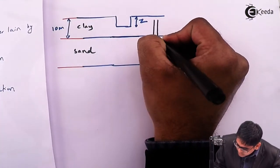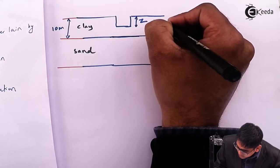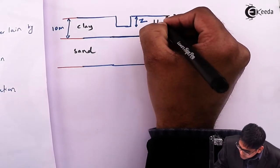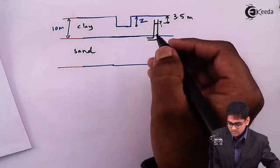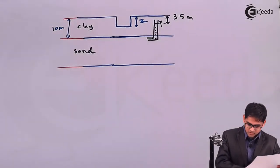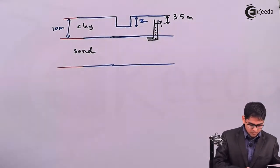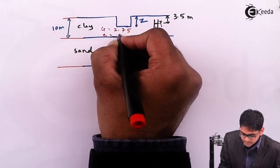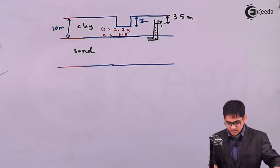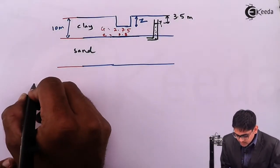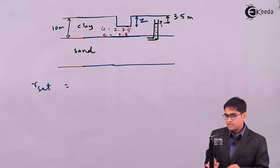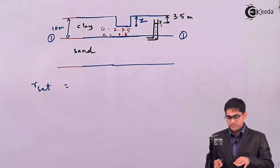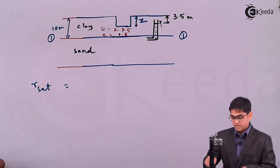If we insert a piezometer in the sand, the water table will rise to an elevation of 3.5 meters. Considering the interface labeled 1-1 at the bottom of the clay, we need to find the balance of total stress and pore pressure at that interface. To calculate self-weight, we must know the saturated unit weight of the clay.